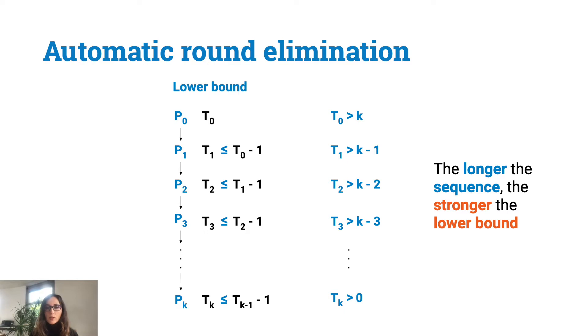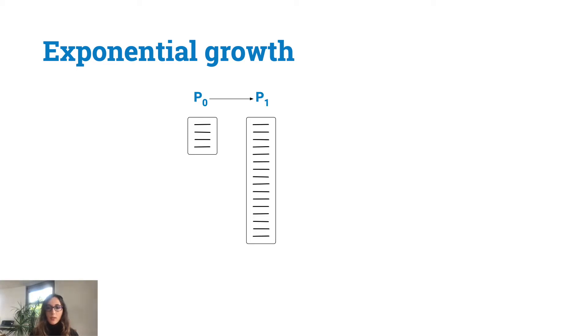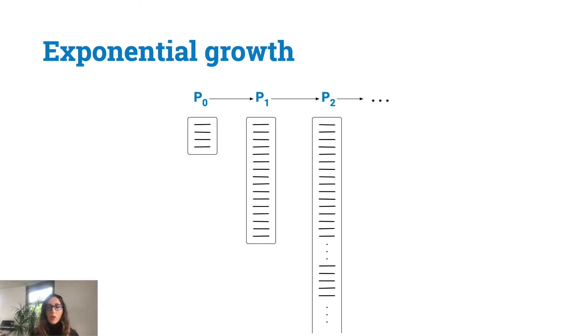The challenge we face when trying to use the automatic round elimination technique for proving lower bounds is the exponential growth in the size of the problems in the lower bound sequence. We start from our problem of interest P0, which we can usually describe in the automatic round elimination framework in a compact way. Then we apply the round elimination technique and get a problem P1 that is exactly one round easier than P0. The size of the description of P1 is very often exponentially, or even doubly exponentially, larger than that of P0. If we continue to apply automatic round elimination we are very soon faced with a problem whose description is very huge and often not even feasible to compute. Moreover, this exponential growth makes it very difficult to understand the structure of each problem in the lower bound sequence.